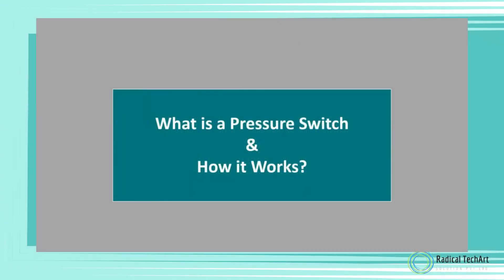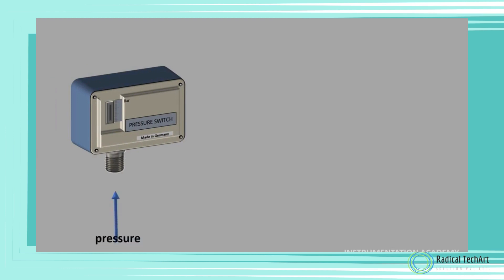In this video we will discuss what is a pressure switch and how it works. As the name indicates, a pressure switch is a switch that operates using pressure. A pressure switch is a device that turns an electrical circuit connected to it on or off when a preset pressure is reached on its input.